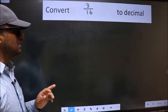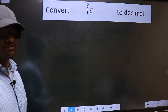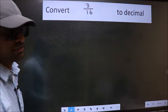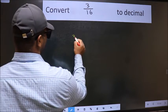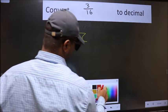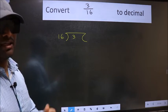Convert 3 by 16 to decimal. To convert, we have to divide. To divide, we should frame it in this way. 3 and 16 here. This is your step 1.